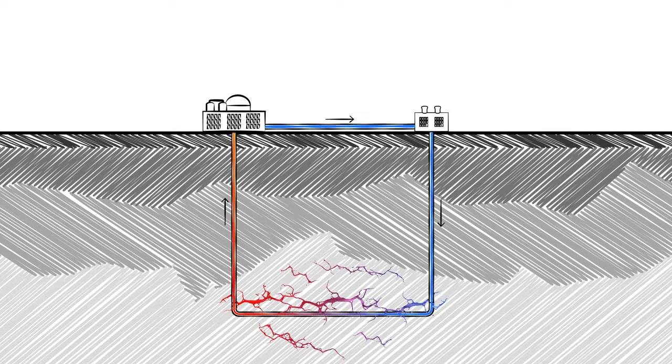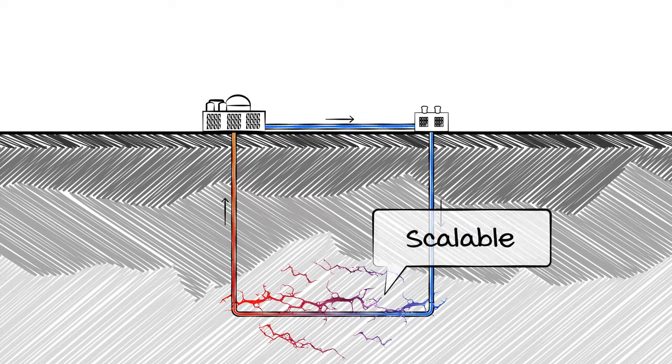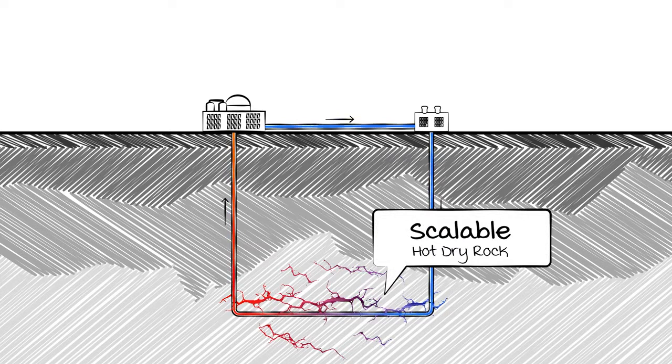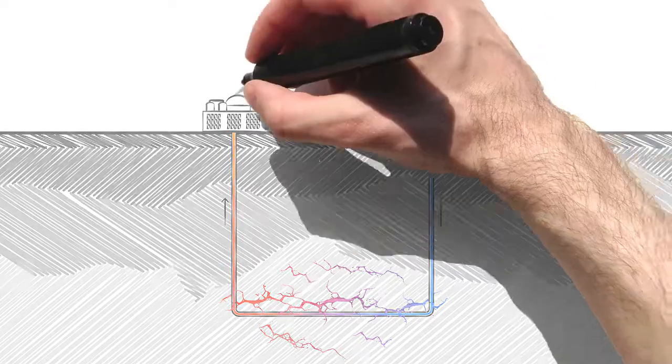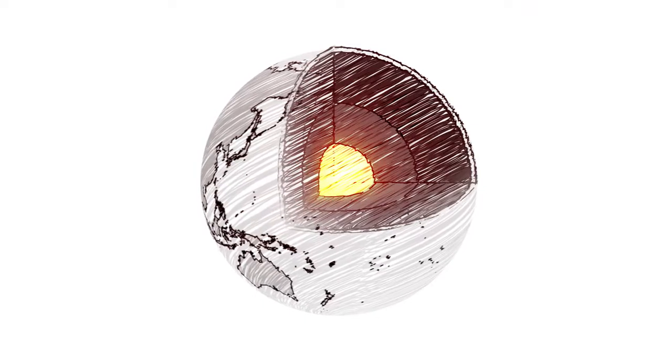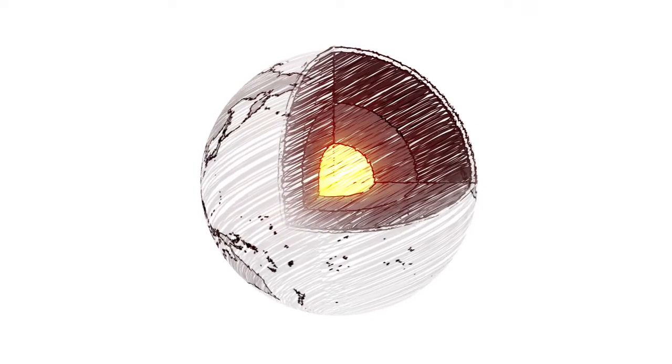EGS, along with closed-loop systems, are typically referred to as scalable or hot-dry rock geothermal because the techniques, if perfected, could scale and feasibly allow geothermal energy to be produced anywhere in the world.